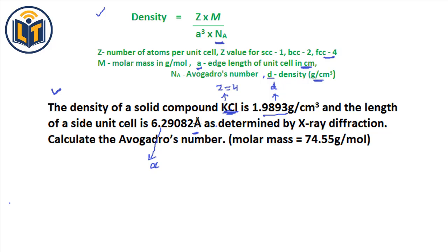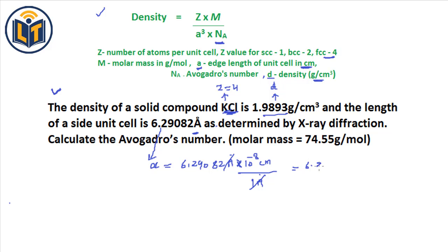In the density formula, a must be in centimeters, but the given value is in angstroms, so we need to convert. Since 1 angstrom equals 10 to the power of minus 8 centimeters, we get a equals 6.29082 multiplied by 10 to the power of minus 8 centimeters. This is the edge length in centimeters.